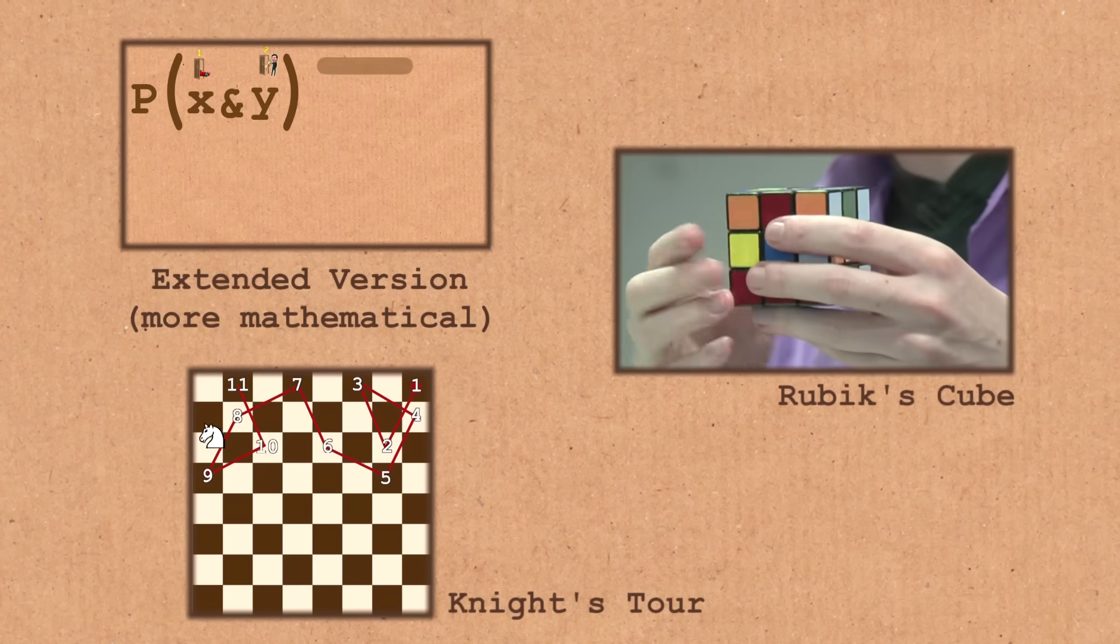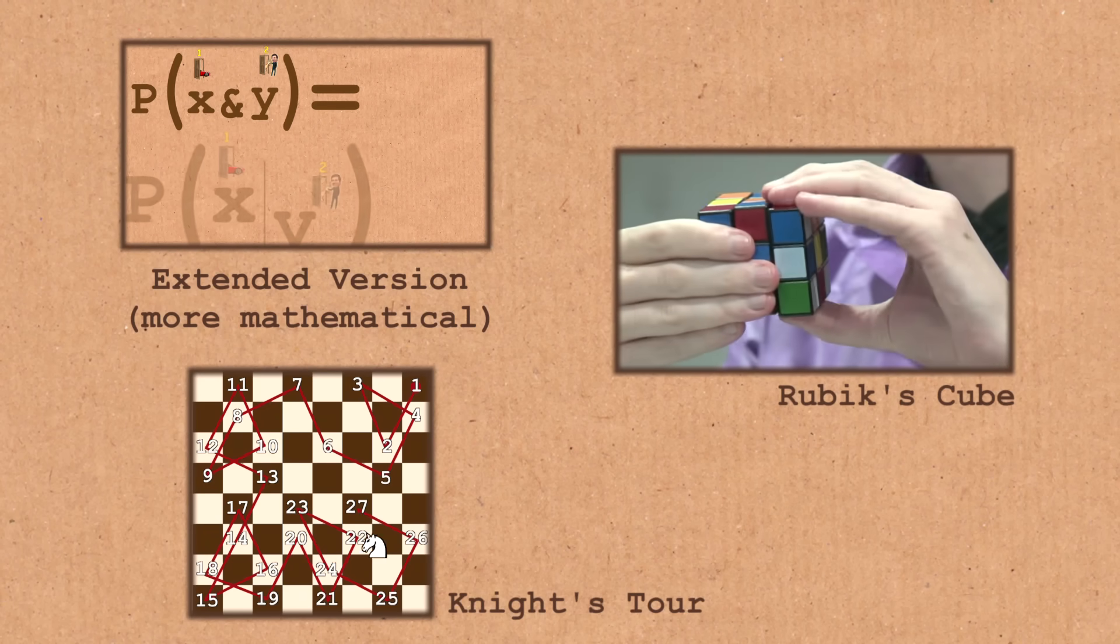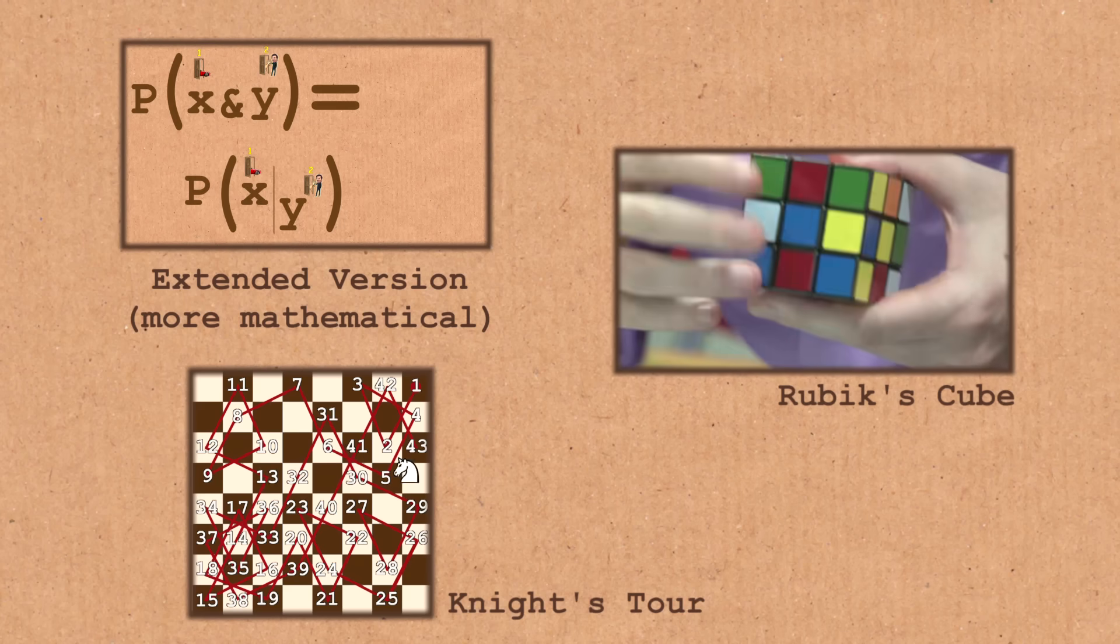P(X|Y) is the probability of X given that Y happens. Given that you know he opened door number two, what's the probability the car's there, times the probability of Y happening by itself.